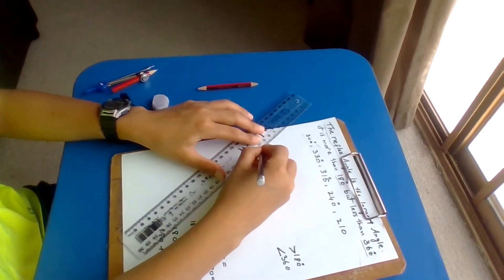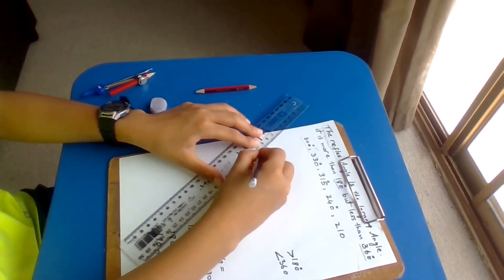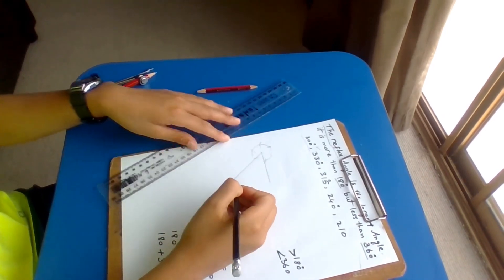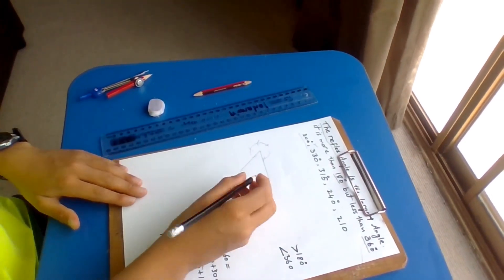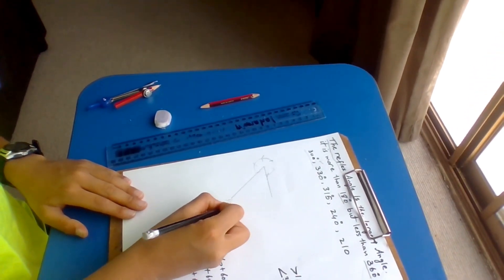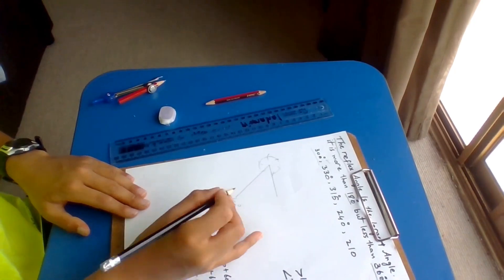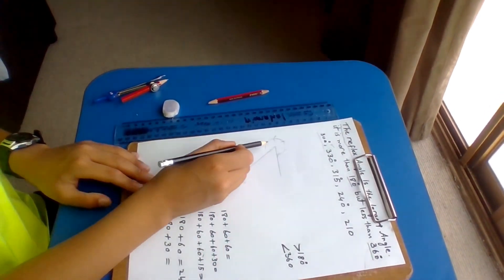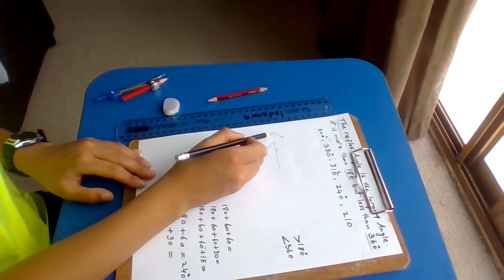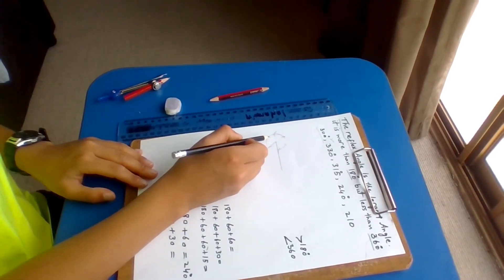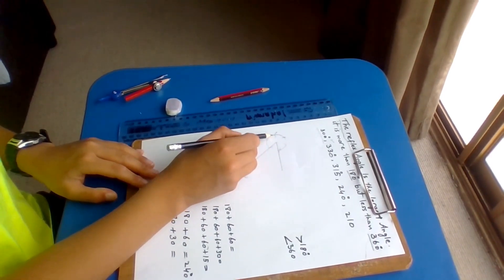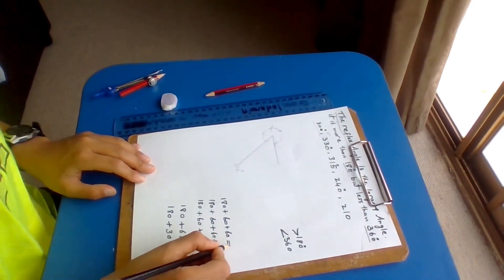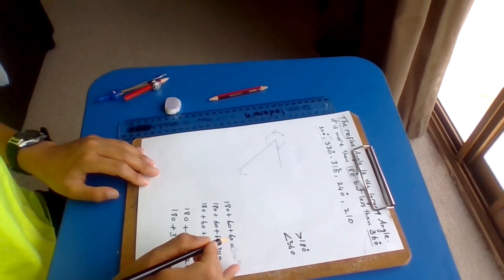300 degrees right here. Done. 300 degrees. It's 60 — like this 180. This 180 plus 60 plus 60 equals 300 degrees. Done.